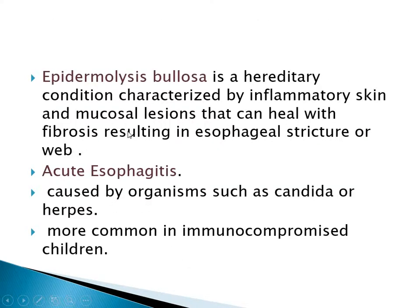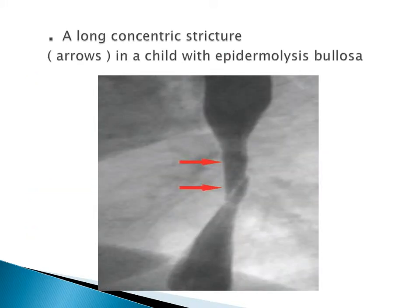Epidermolysis bullosa is a hereditary condition characterized by inflammatory skin and mucosal lesions that can heal with fibrosis, resulting in esophageal stricture or web. In acute esophagitis caused by organisms such as candida or herpes, it is more common in immunocompromised children. This image shows a long concentric stricture in a child with epidermolysis bullosa.